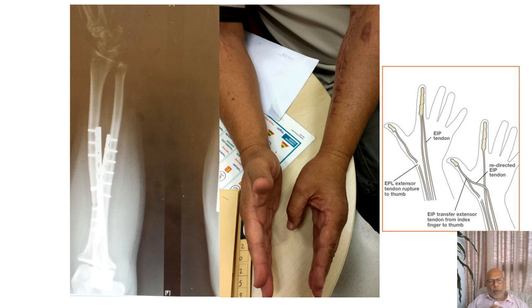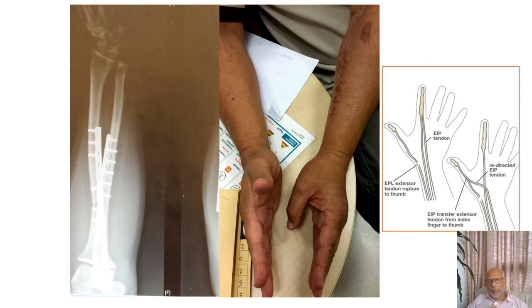In this case, we see a radius and ulnar fracture that has been fixed by orthopedics. At four weeks post-op, the patient was noted to have an inability to extend the thumb. This is usually the result of either injury during drilling where the drill may have gone through the cortex and caught the extensor pollicis longus tendon in the third compartment, resulting in a rupture. These are difficult to repair primarily because there will be extensive loss of tendon. A very elegant transfer is using the EIP tendon, which is found on the ulnar side of the index finger, and transferring that to the ruptured EPL distal stump.